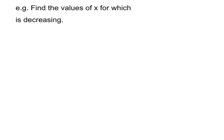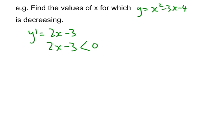We want to find the values of x for which the curve y equals x squared minus 3x minus 4 is decreasing. So we find y dash by differentiating, and we get 2x minus 3. For decreasing, we want 2x minus 3 to be less than 0. Solving that inequality: 2x is less than 3, so x is less than 3 on 2. The values of x for which the curve is decreasing are all x values less than 3 on 2.